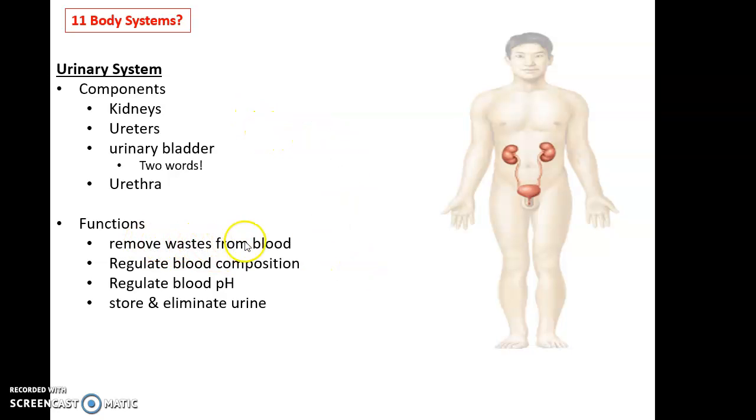Functions of the urinary system include removing wastes from the blood, regulation of proper blood composition, and regulation also of the blood's pH. And then, of course, storing those wastes in the form of urine in the urinary bladder, and then eliminating the urine through the urethra.